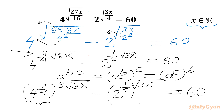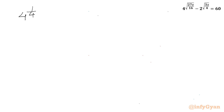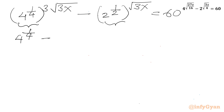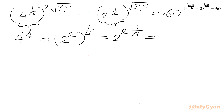Now, 4 raised to the power 1 over 4, and 2 raised to the power 1 over 2 — both values are actually equal. We can write base 4 as 2 squared, then raise it to the power 1 over 4. Using the exponential property and multiplying the exponents, it becomes 2 raised to the power 1 over 2, which is the square root of 2. So 4 raised to the power 1 over 4 is the same as square root of 2.